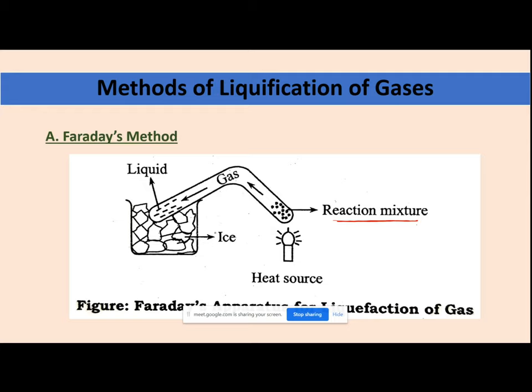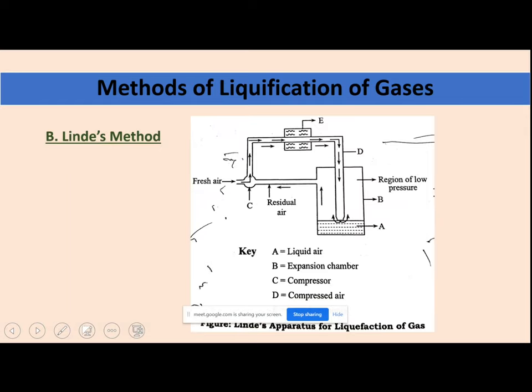The gas moves to the other end of the bent tube, which is placed in ice. As soon as the gas molecules come in contact with the ice cubes, it reduces the temperature of the gas and the gas starts to liquefy. This simple method cannot be employed for each and every gas. The restriction is that only those gases whose critical temperature is more than the atmospheric temperature can be liquefied using Faraday's method.